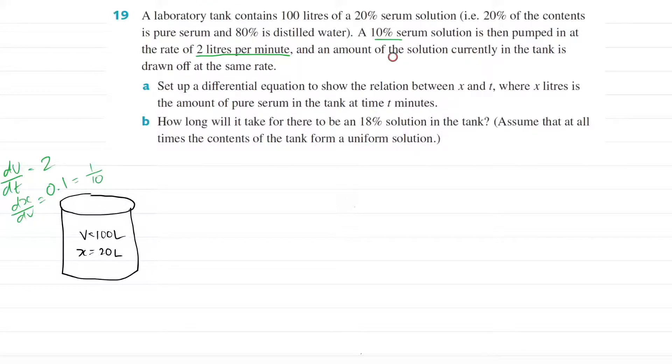Okay, then let's look at the outflow. An amount of the solution currently in the tank is drawn off at the same rate. By same rate, that means the volume. They're not talking about the concentration. So the concentration is not 0.1, don't get that confused. It's just the same rate, which is your volume. So it's going out at 2 liters per minute as well.